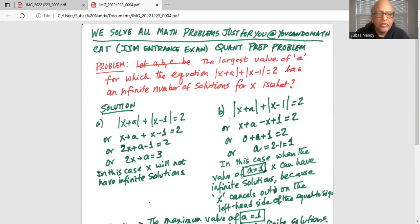The equation |x+a| + |x-1| = 2 can be written as x+a plus x-1 equals 2, or 2x+a-1 equals 2, or 2x+a equals 3. In this case, x will not have infinite solutions for any particular value of a.